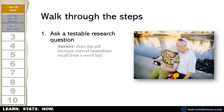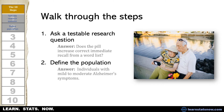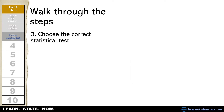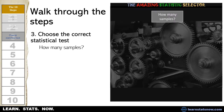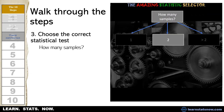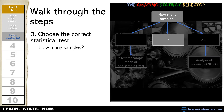We ask a testable research question: does the pill increase correct immediate recall from a word list? Then we define our population — individuals with mild to moderate Alzheimer's symptoms. The first step is choosing the correct statistical test. How many samples are there? There are two samples: a sample of pre-test scores and a sample of post-test scores. If we had only one sample we'd do a z-test or one-sample t-test. If we had more than two samples we'd do analysis of variance. Because we have a pre and post...